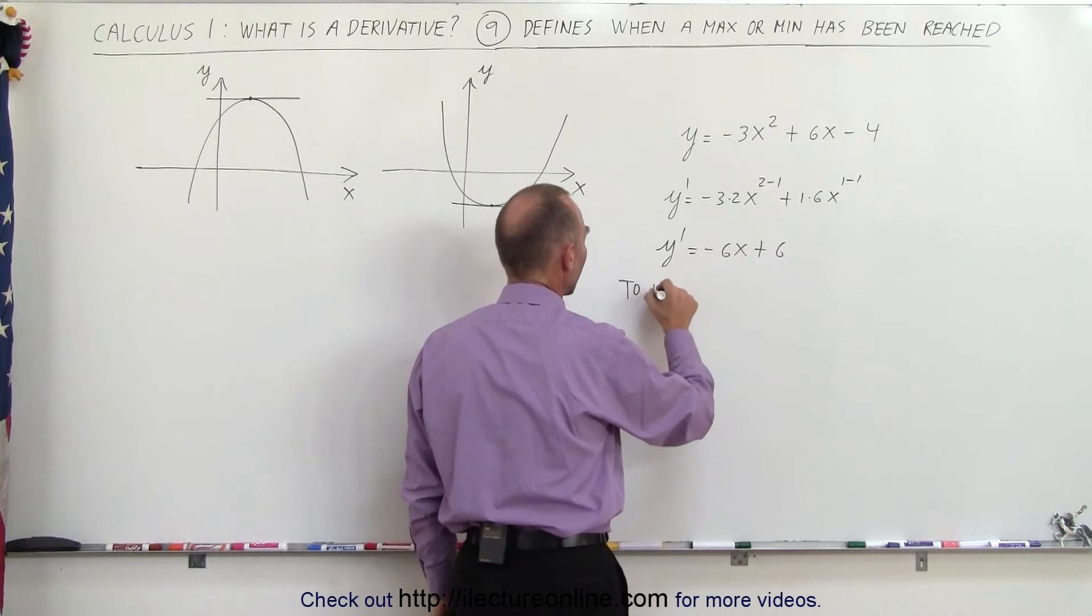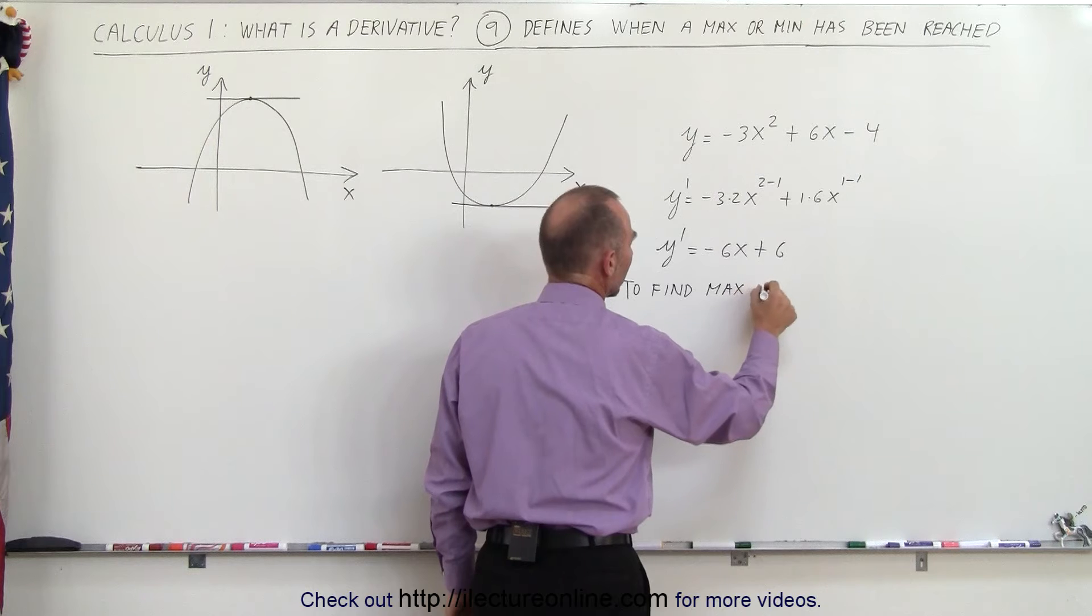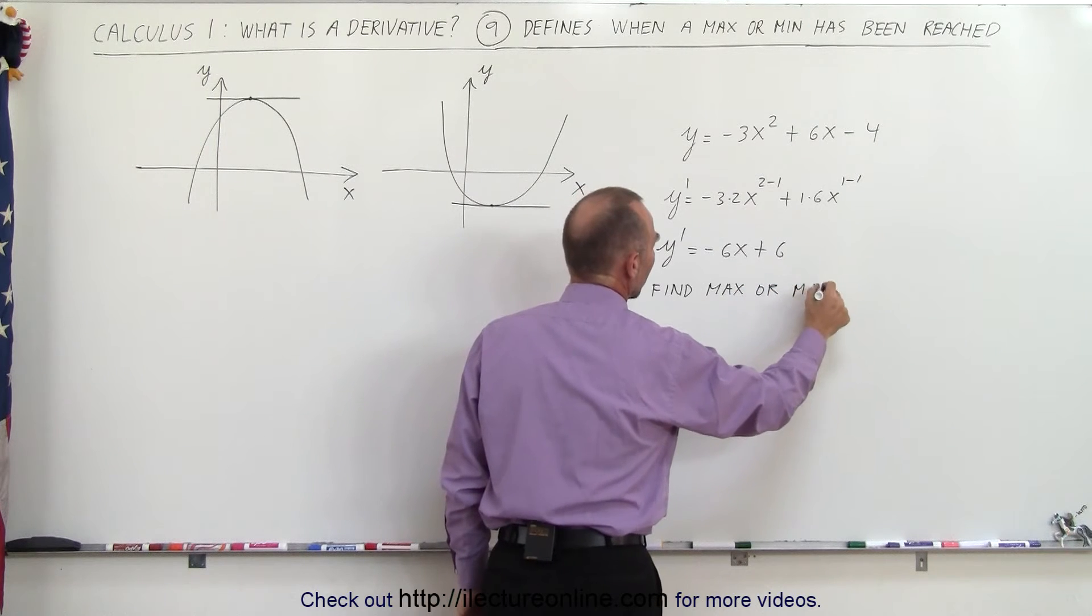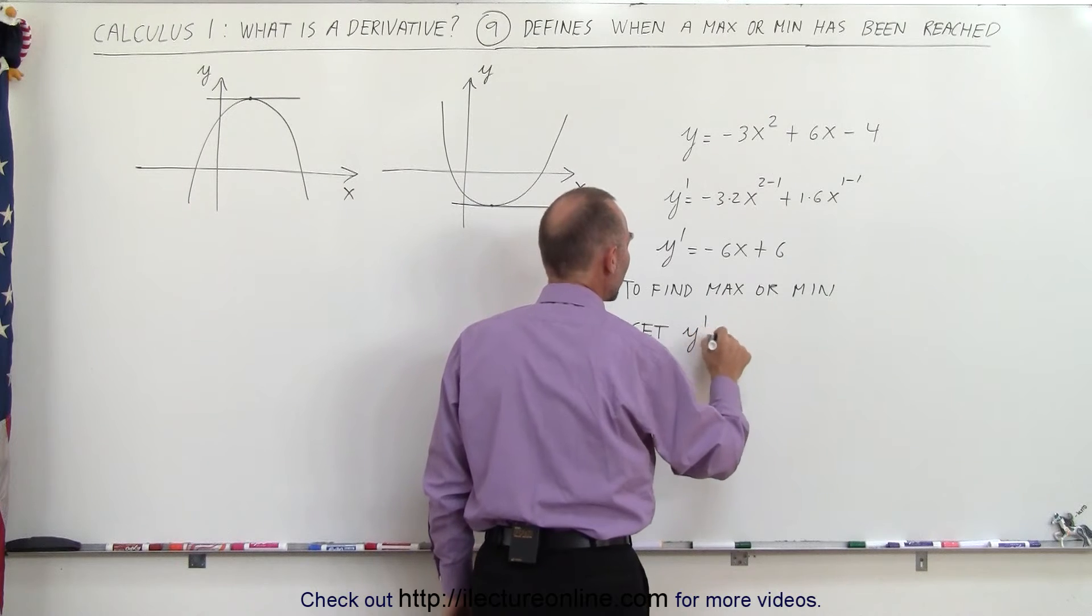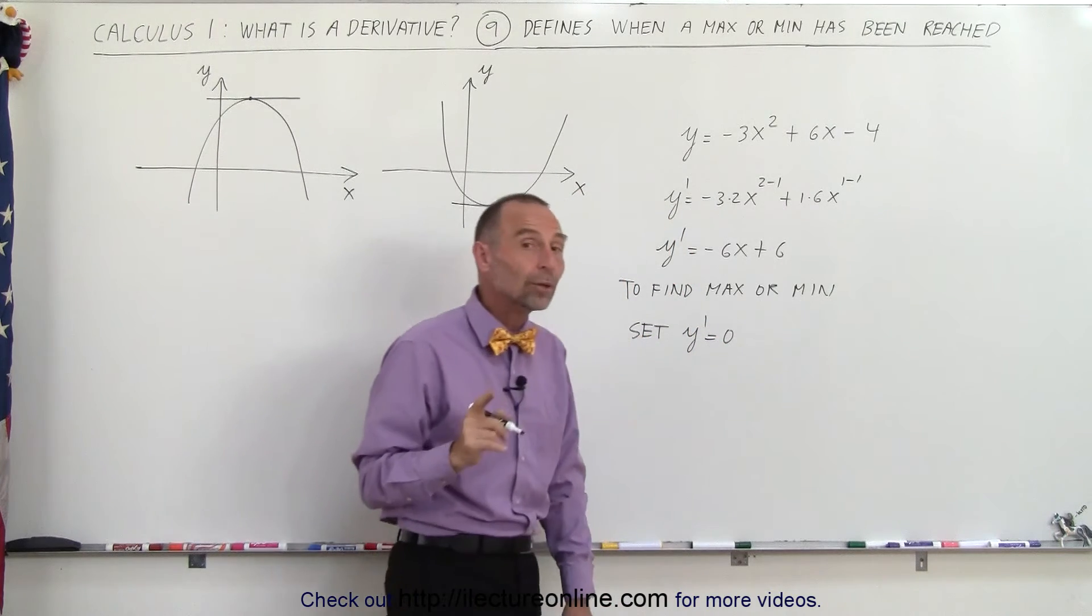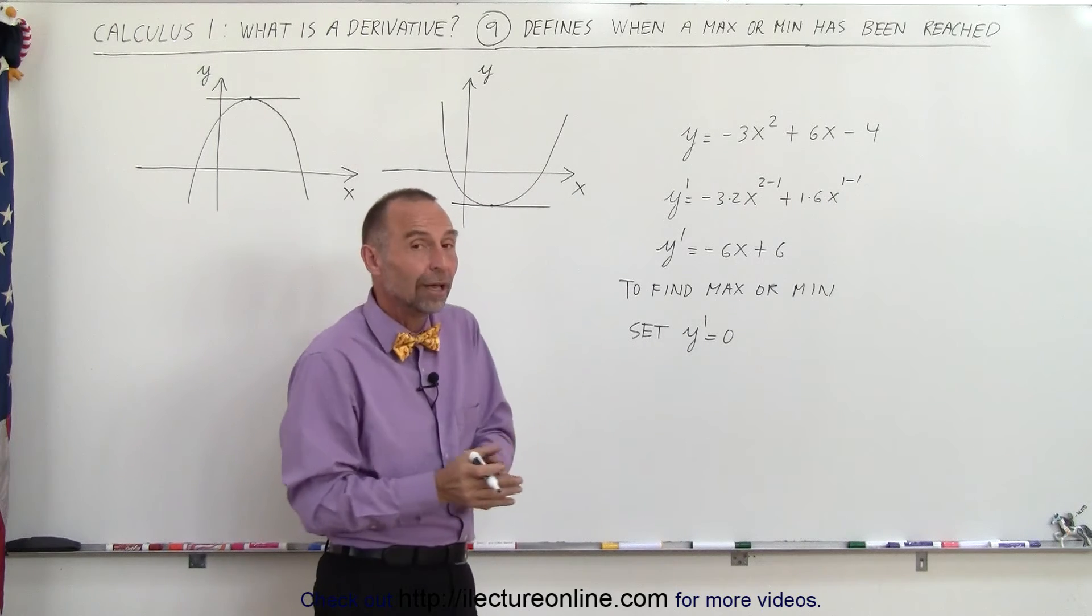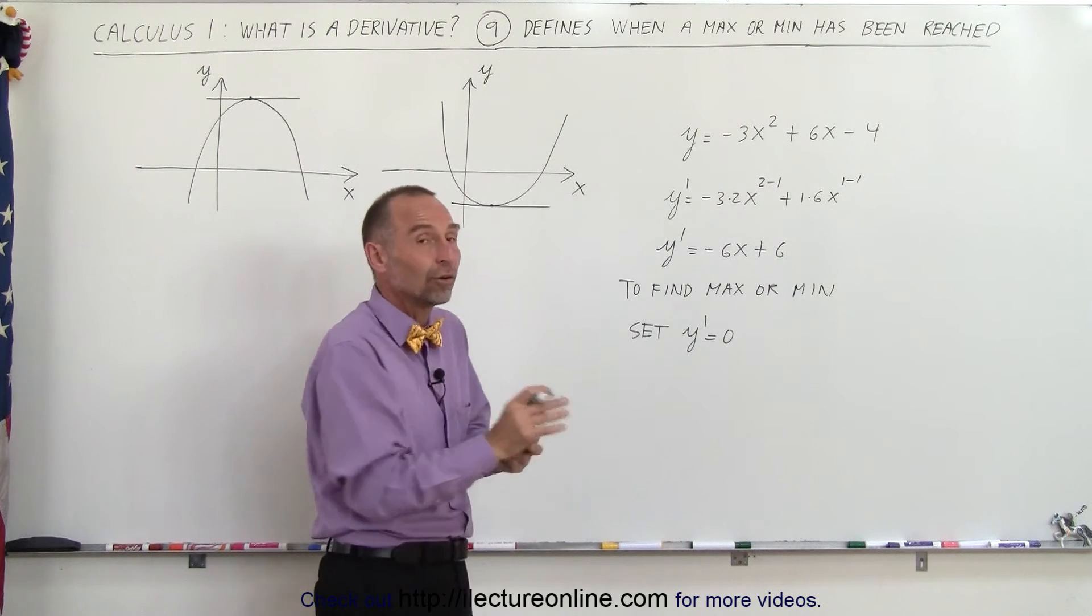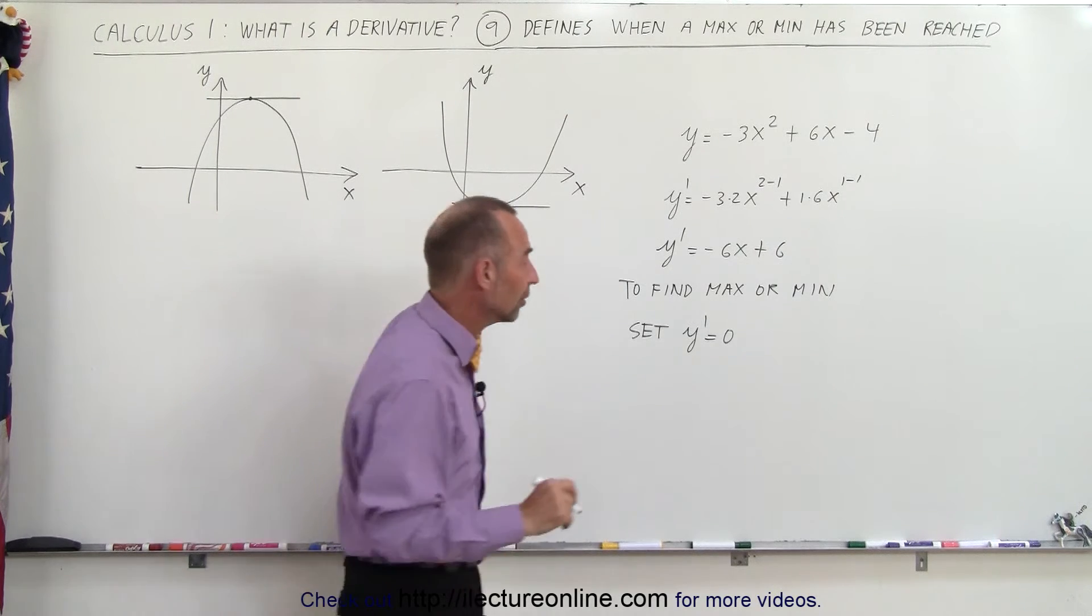So to find the max or min, we're going to set the derivative y prime equal to zero, because remember we know that at the maximum or the minimum point the derivative is zero. And so we're going to set the derivative equal to zero so we can solve for the value for x that will tell me where the derivative is zero.